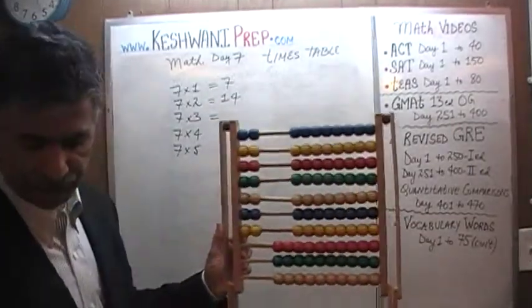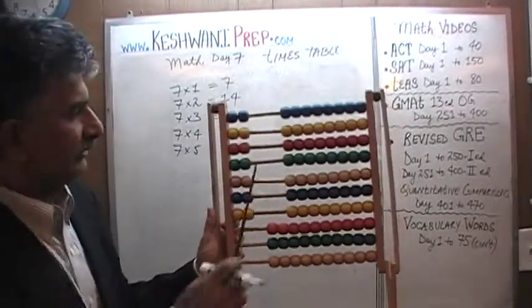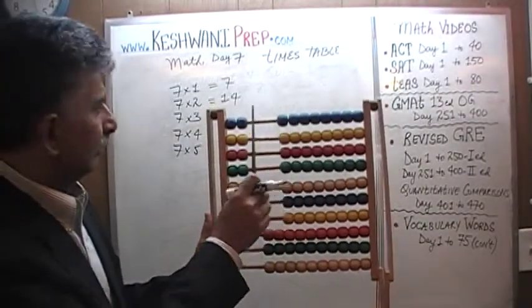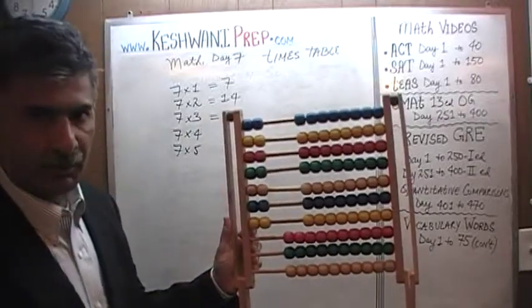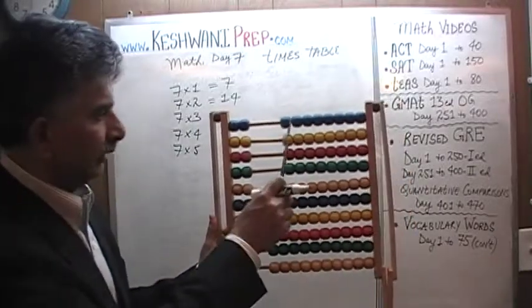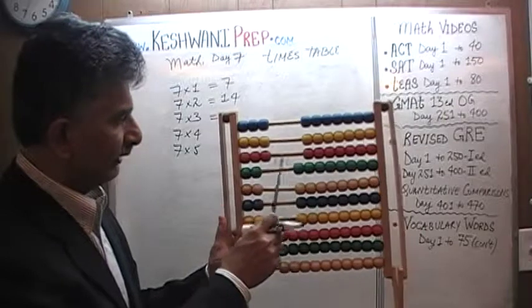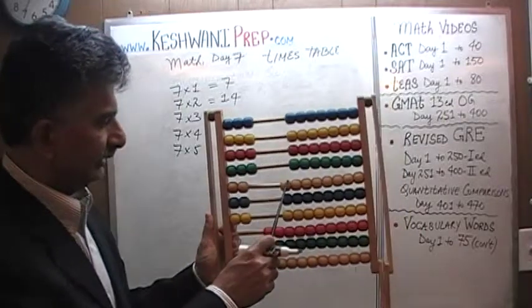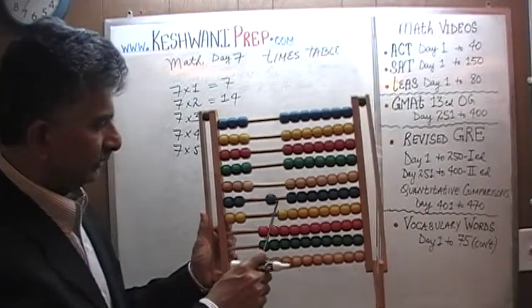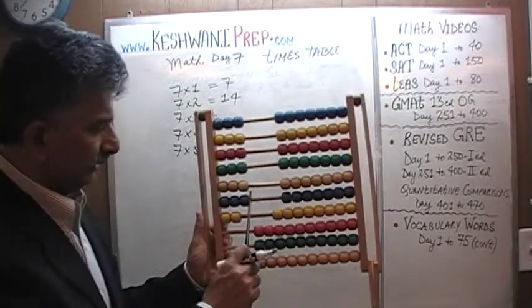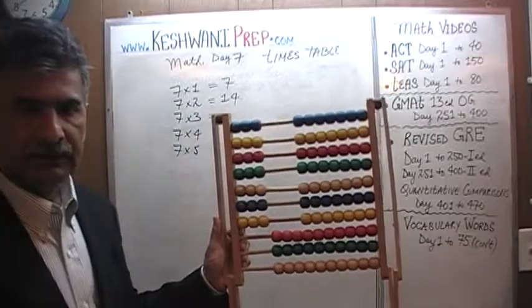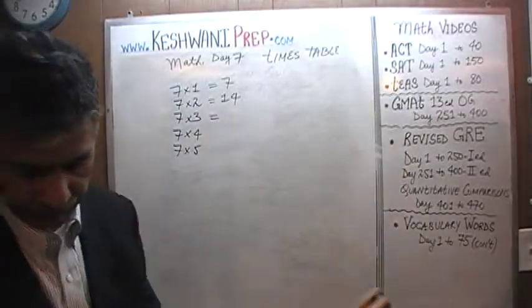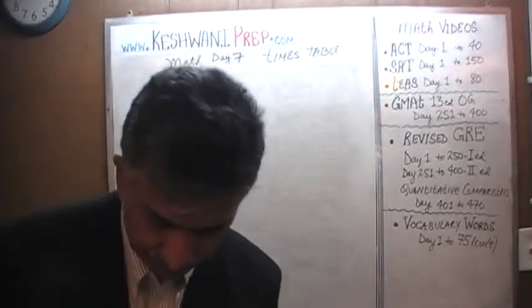How about 7 threes? We need 3s now. We know these are 14. We are going to add 7 more to it: 15, 16, 17, 18, 19, 20, and 21. 7 threes are 21.